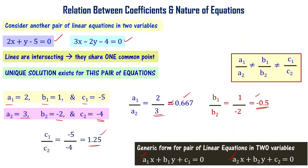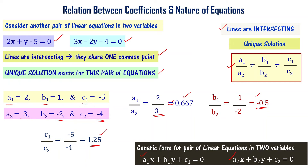Since a1/a2 is not equal to b1/b2, the lines are intersecting, giving a unique solution — a consistent set of linear equations. Note that we don't even need to check c1/c2 here. Once a1/a2 ≠ b1/b2, we know the lines are intersecting and there is a unique solution. Please note this.